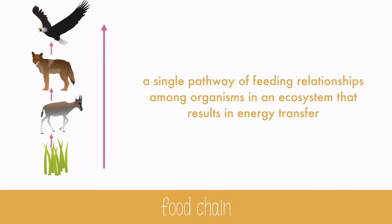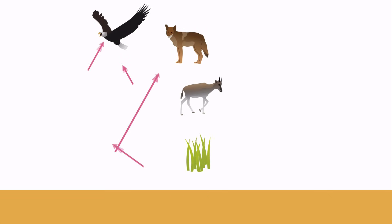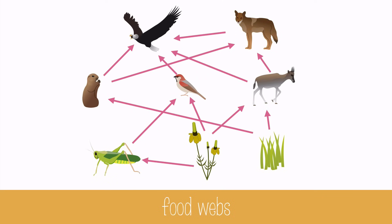Food chains are a great way to follow energy transfer, but in reality a food chain is oversimplified. A food web consists of interrelated food chains, and it's a better representation of reality. You can see all the different organisms in an ecosystem or habitat and how they relate.